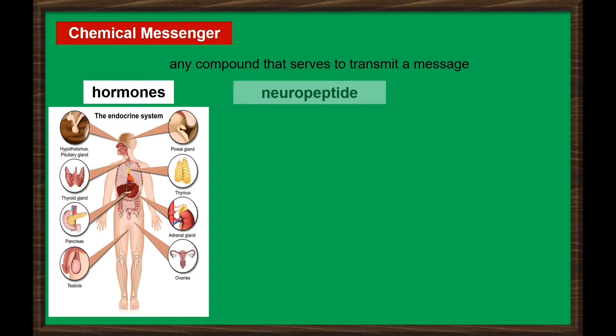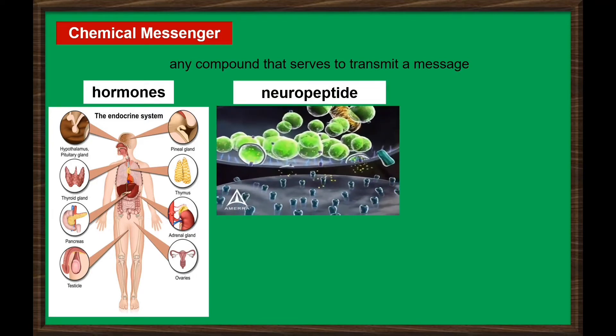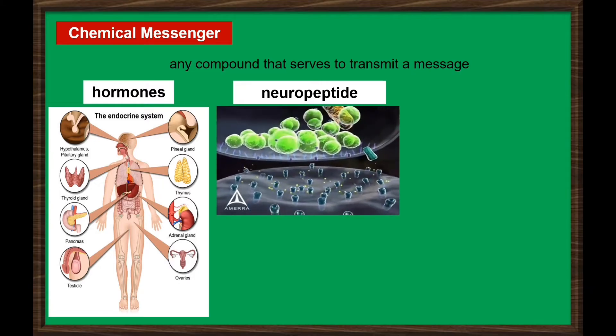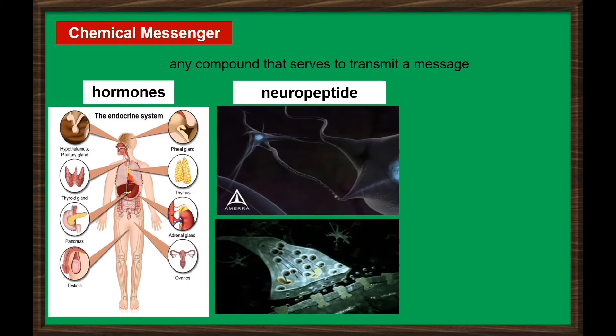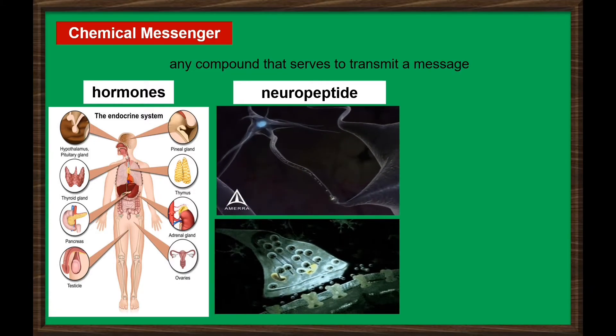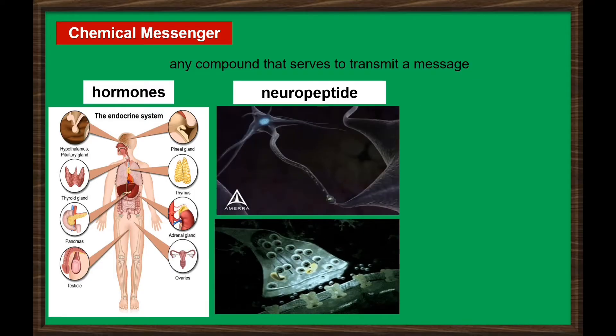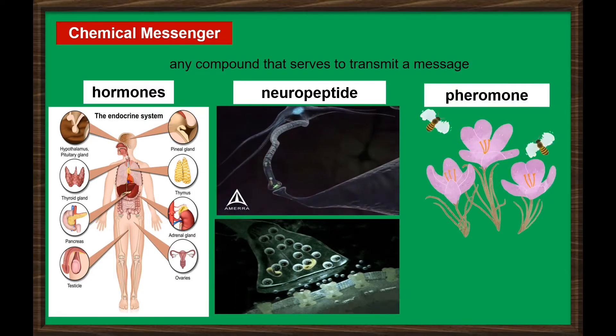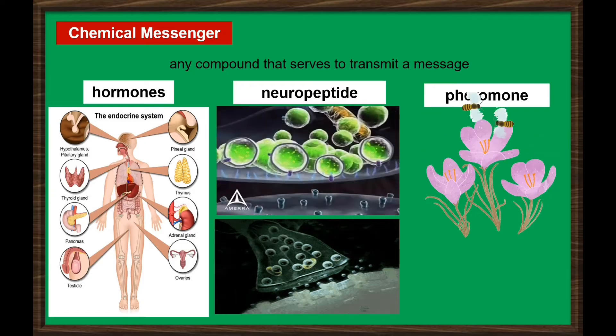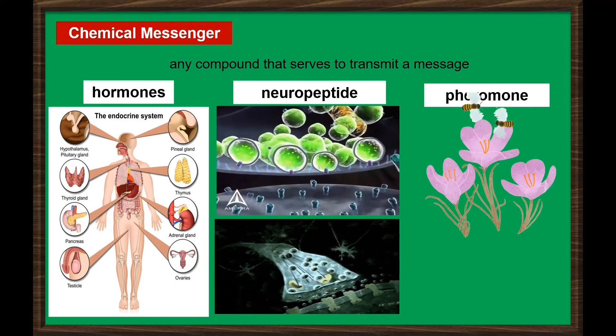Next is neuropeptide, that acts as hormones or neurotransmitters. They send signals quickly to the different parts of the body. And lastly, pheromone, a chemical factor that triggers a social response in members of the same species.